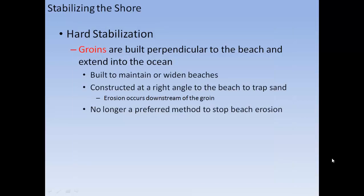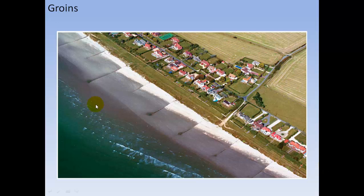Groins are built perpendicular to the beach and extended into the ocean, built to maintain or widen beaches by trapping sand. However, erosion occurs on the downstream side of a groin. This is no longer the preferred method to stop beach erosion. Sand transport moves in one direction — depositing on one side of the groin and eroding on the other.